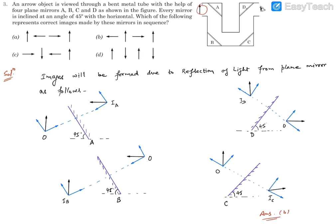So this is the object, this is mirror A, then this is mirror B, then this is mirror C, then this is mirror D, and then finally you are watching from here. So what is going to happen? This mirror A is going to make the image of this object.